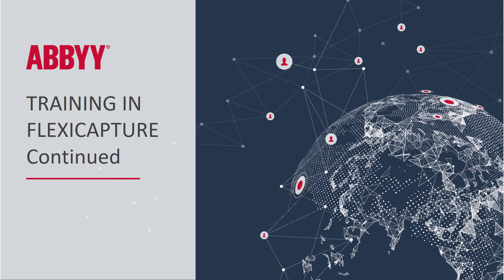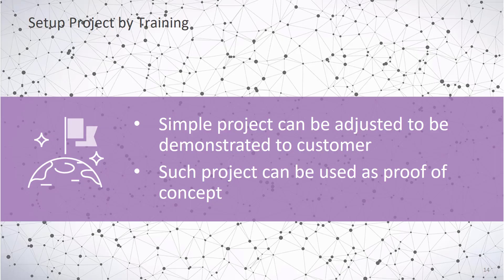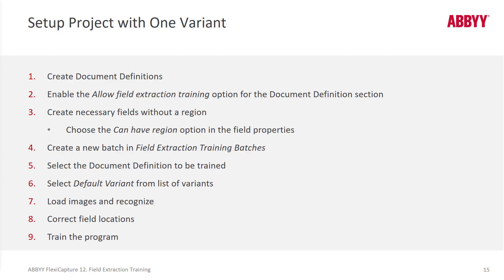ABBYY FlexiCapture training continued. Let's talk about setting up a project with training. When you set up a project, it's pretty straightforward: creating a document definition, creating fields, and then doing some simple rubber banding so that the software can learn where the fields are. Such projects can be set up for a quick proof of concept or demo, but depending on the complexity of the forms and the size of your sample set, it could be production ready, or you may just need to open the layout and make some adjustments.